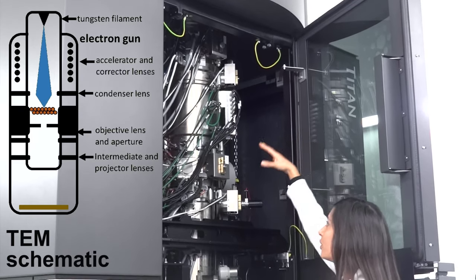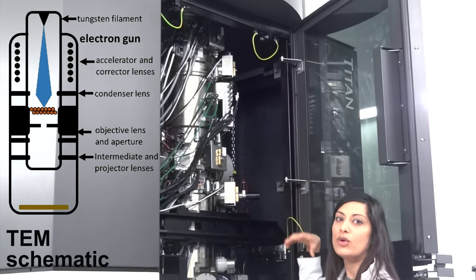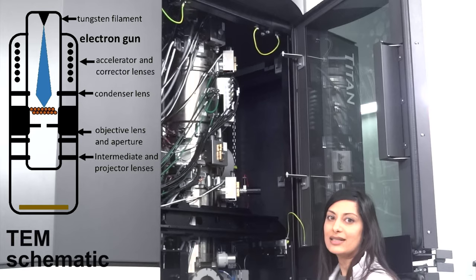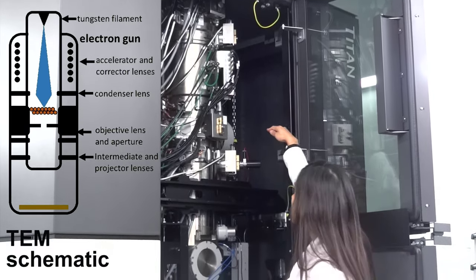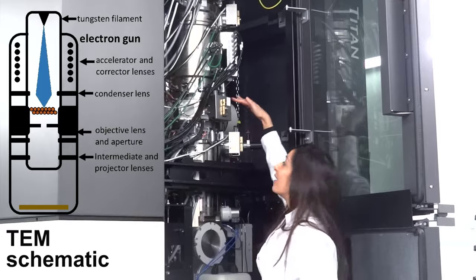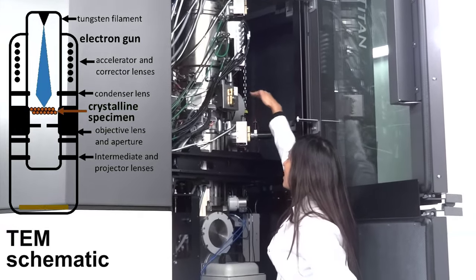They pass through the column and are moved around by magnetic lenses which help focus the beam and get it to go in the right place. The sample lies, you can't see it here, but it lies at this height in the column.